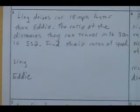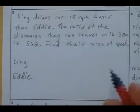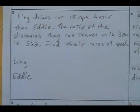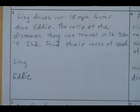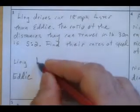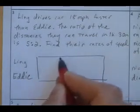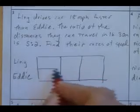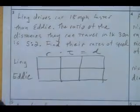When I set these ones up, I'm not gonna solve them all the way. I'm just gonna get you the initial setup. Ling drives a car 18 miles per hour faster than Eddie. The ratio of the distances they can travel in 1 hour 30 minutes is 5 to 2. Find their rates of speed. Well, we know we have a rate-distance-time problem, a rate-time-distance problem. So what do we know?